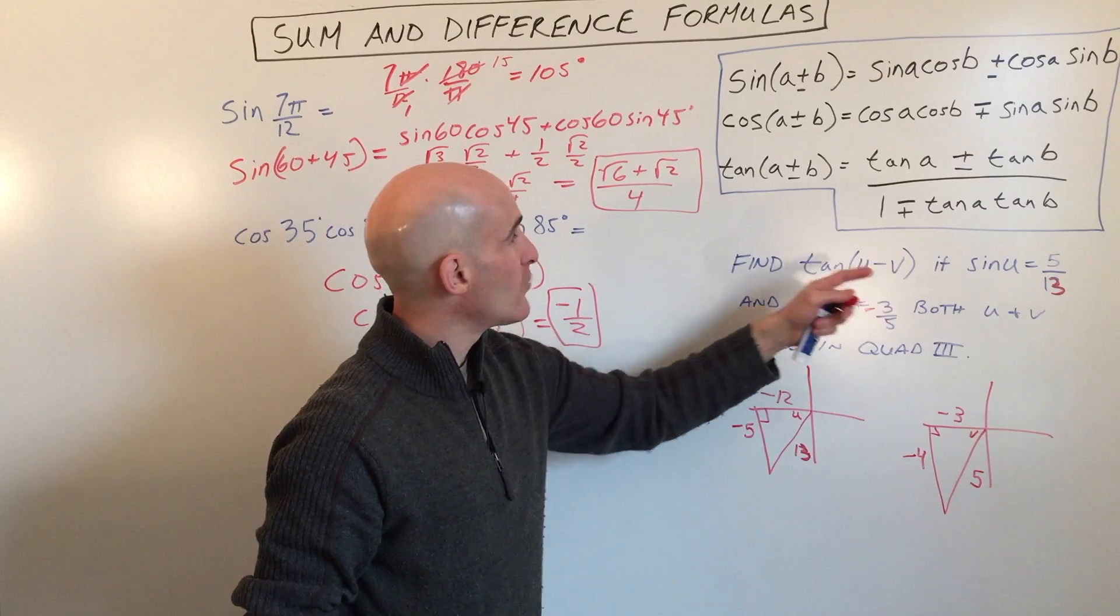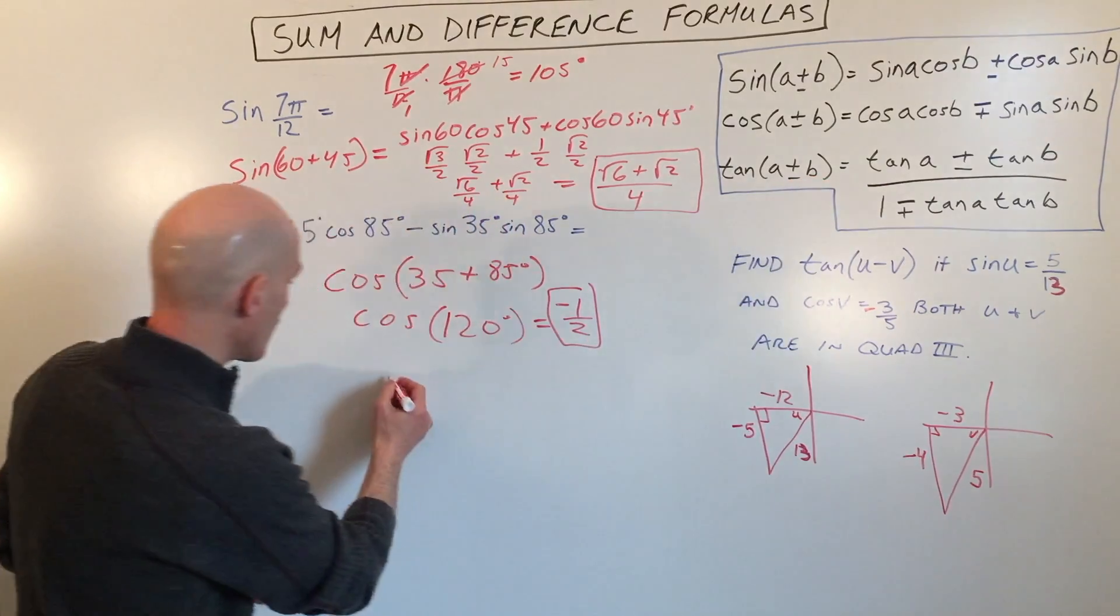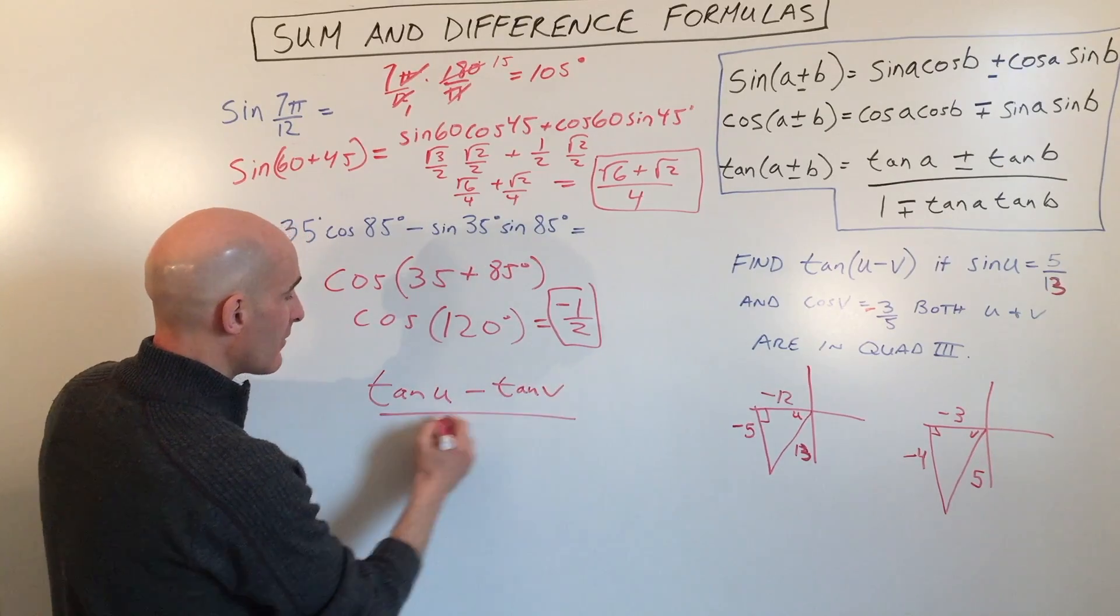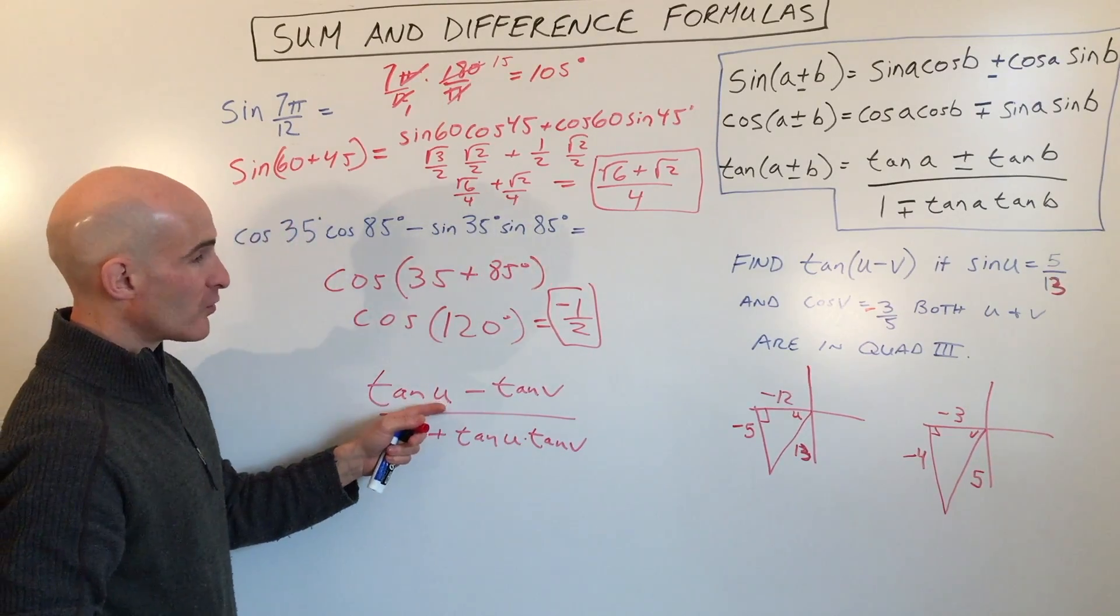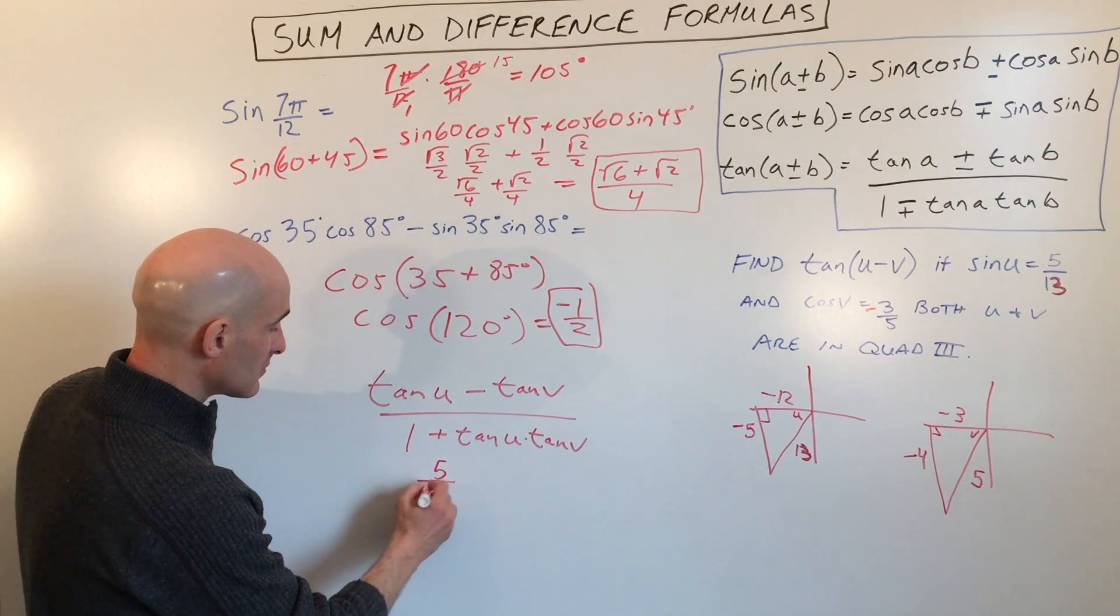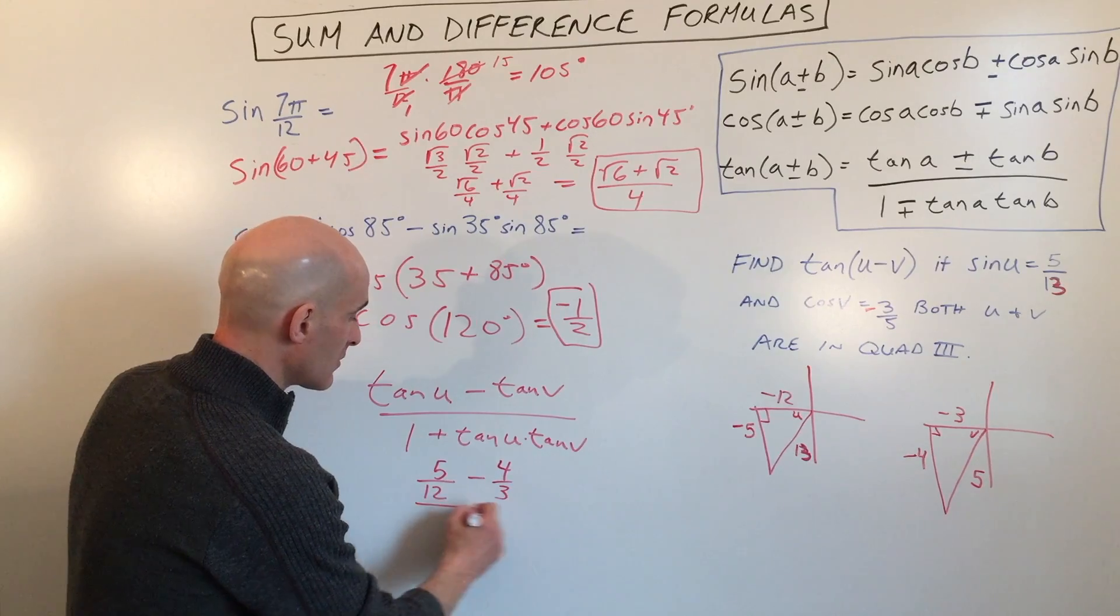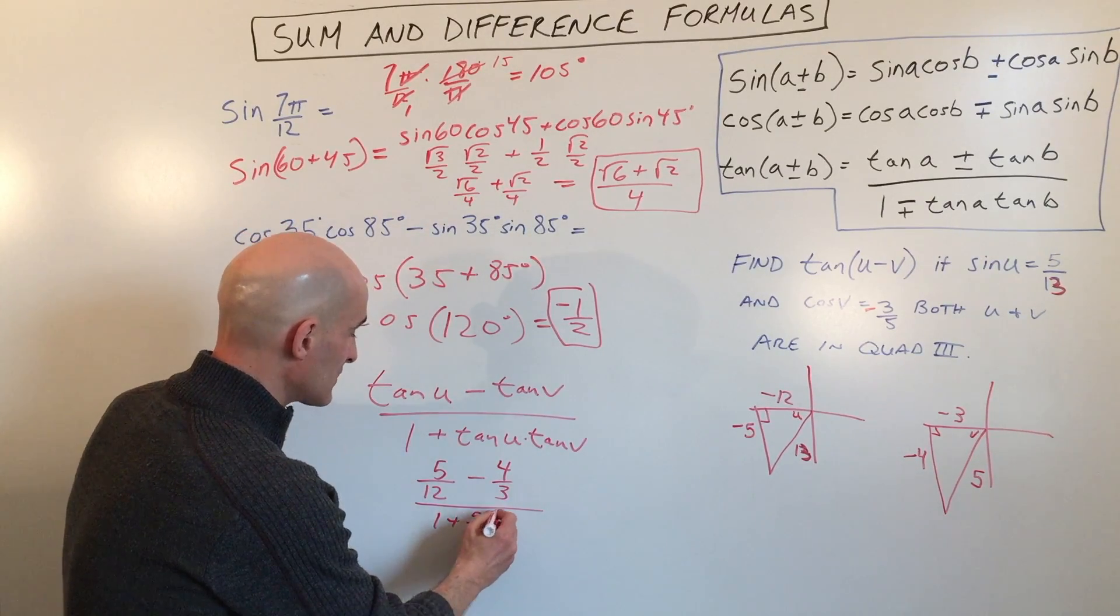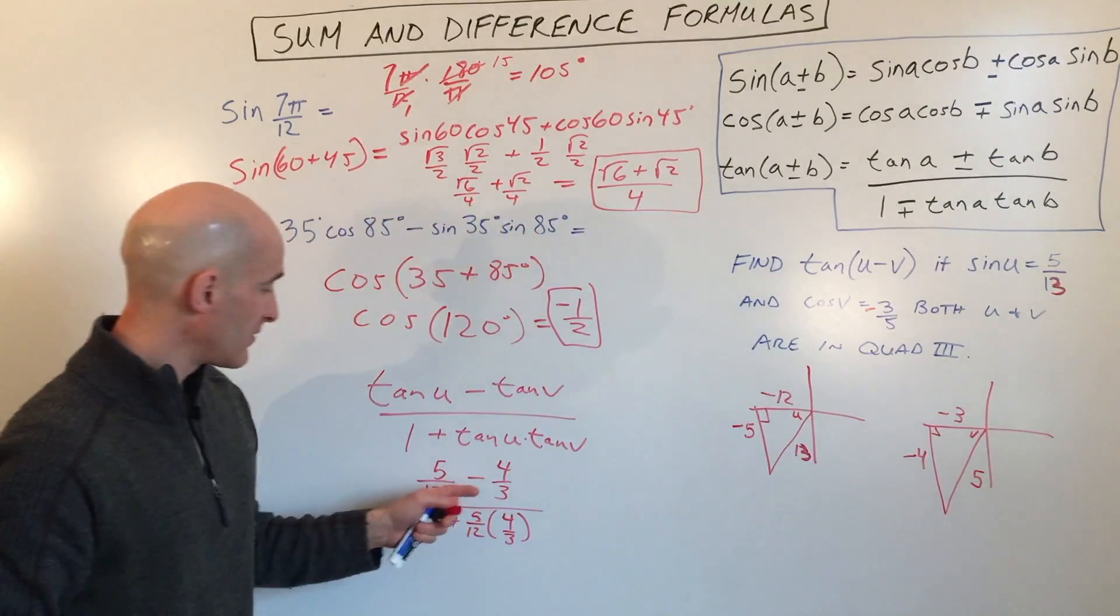So now what we're going to do is we're going to find out what is the tangent of u minus v. So here you can see we're using this tangent difference formula, tangent of u minus v. And so what we're going to do is we're going to expand this out. I'll go over here. We've got tangent of u minus tangent of v, all divided by 1 plus tangent of u times the tangent of v. So where do we find the tangent of u? We go to the triangle. Tangent is opposite over adjacent, so that's going to be 5 twelfths, minus the tangent of v, which is opposite over adjacent, so that's going to be 4 thirds, divided by 1 plus the tangent of u, which is what we got over here, 5 twelfths, times the tangent of v, which is what we solve for here, which is 4 thirds. Notice that the negatives cancel, so that's why we have these are positive values.